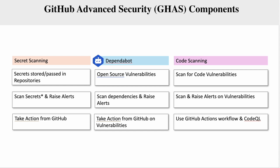Secret Scanning, on face value, covers secrets stored or passed in your repository. It allows you to scan for secrets and raise alerts. It also can take actions from GitHub.